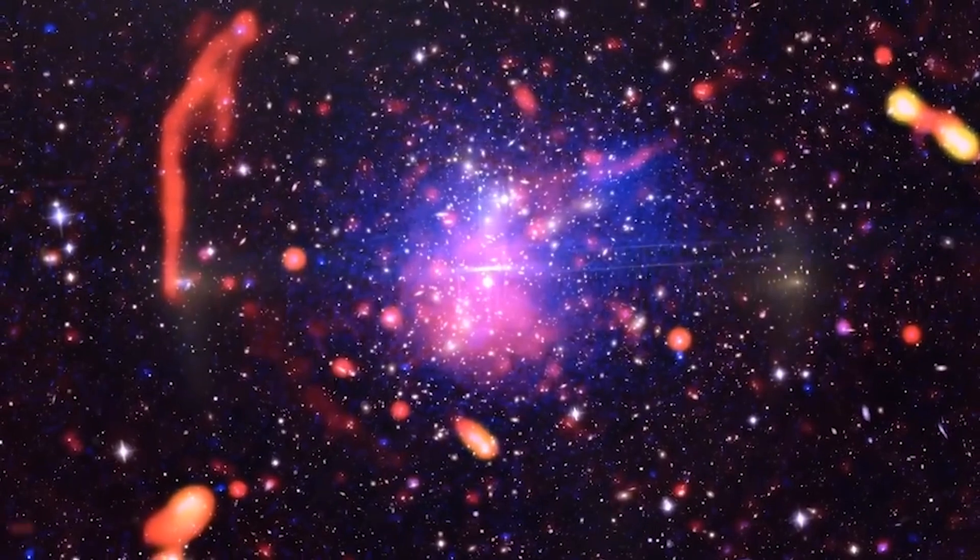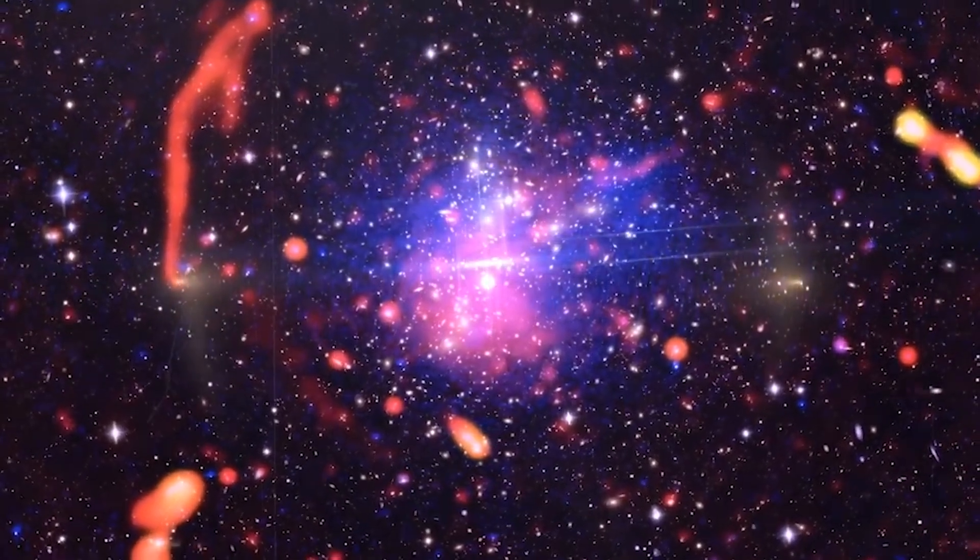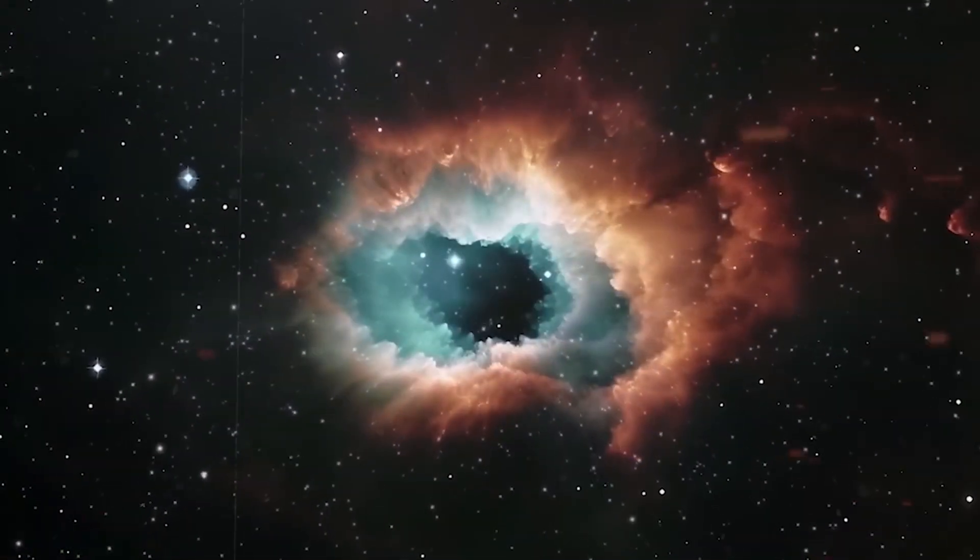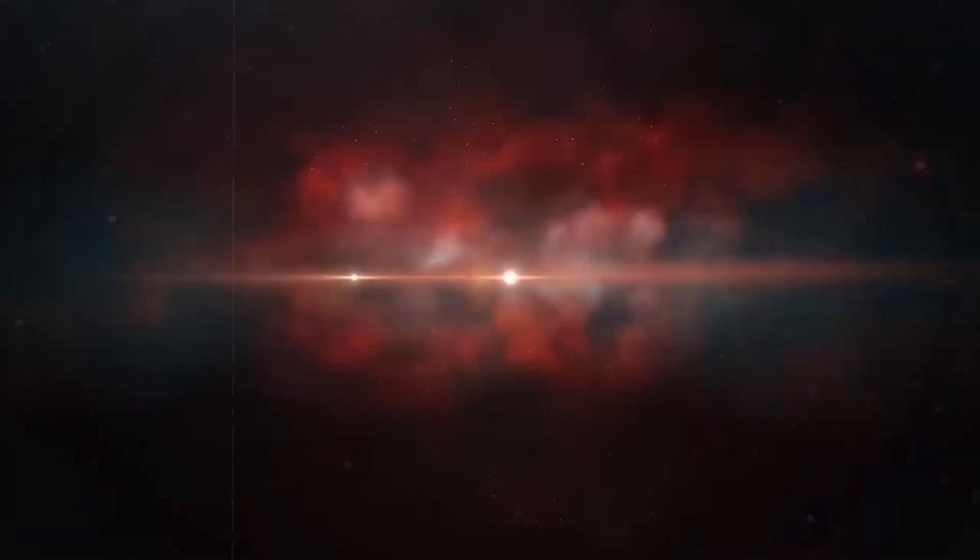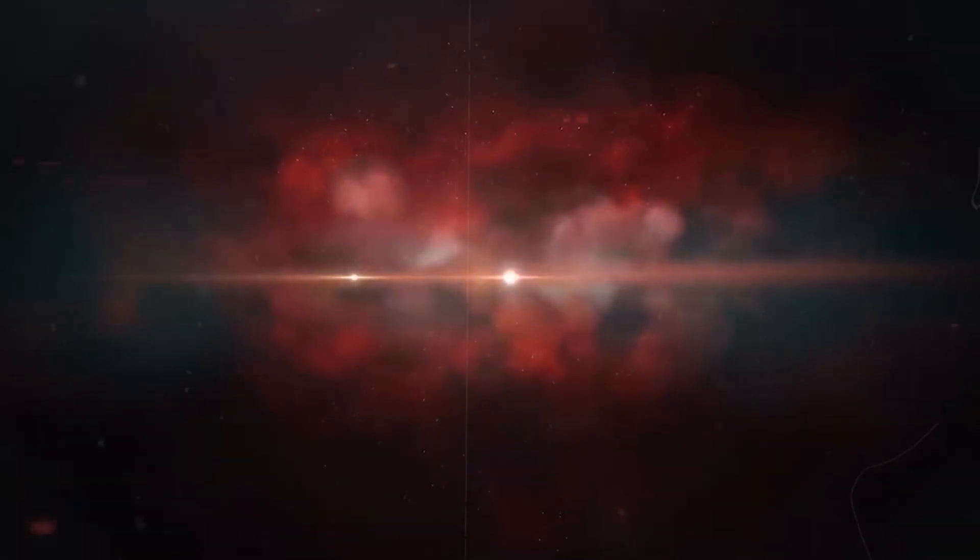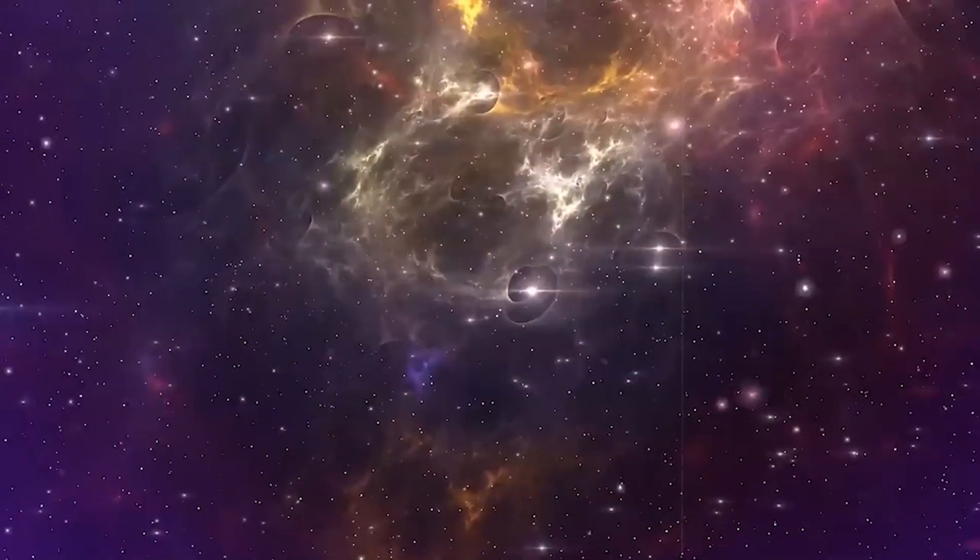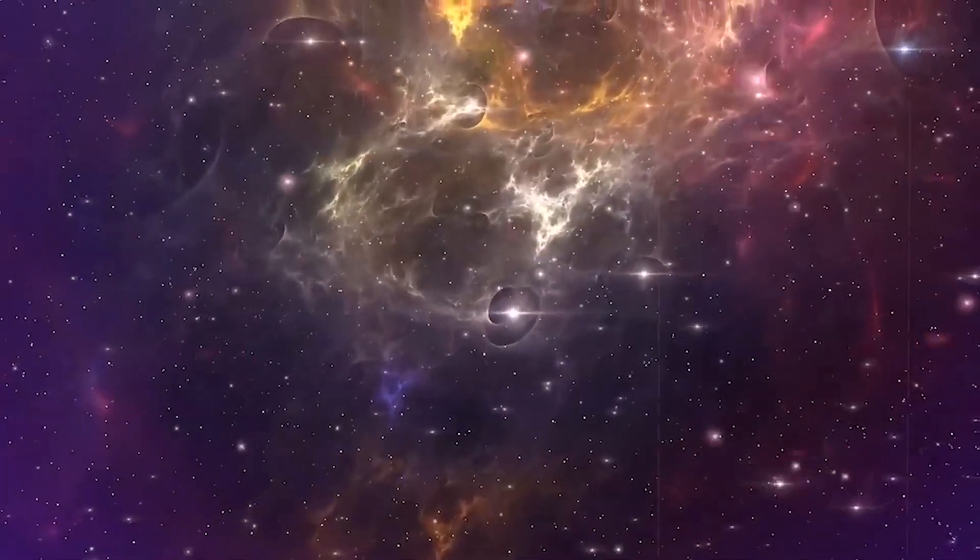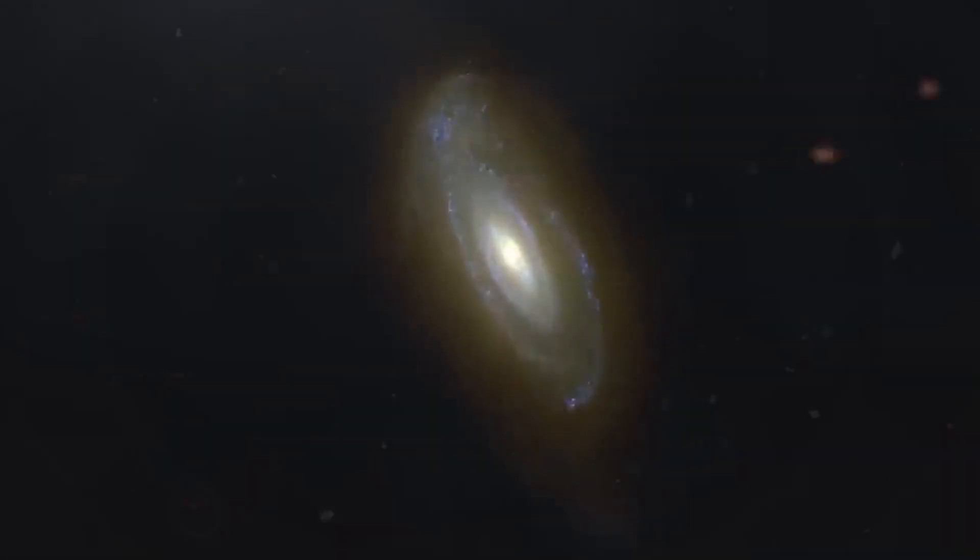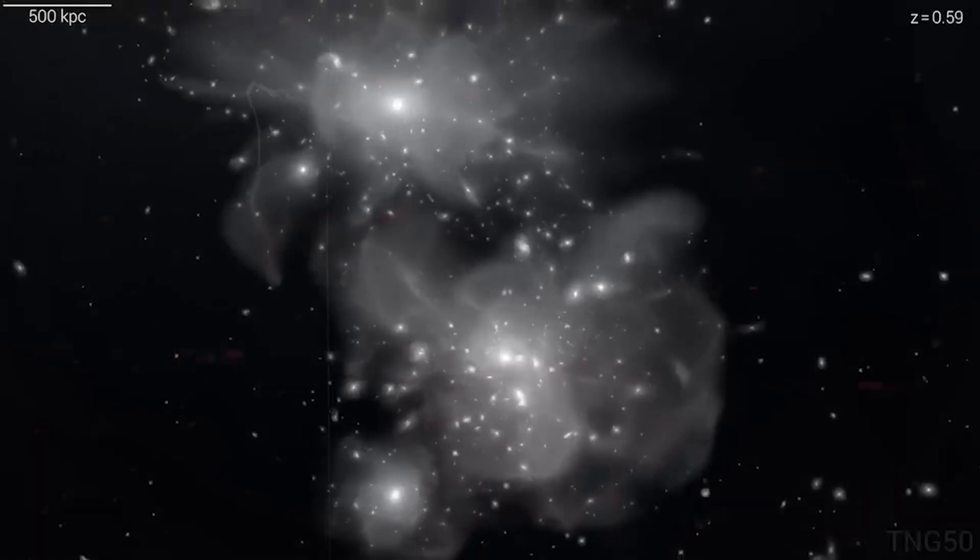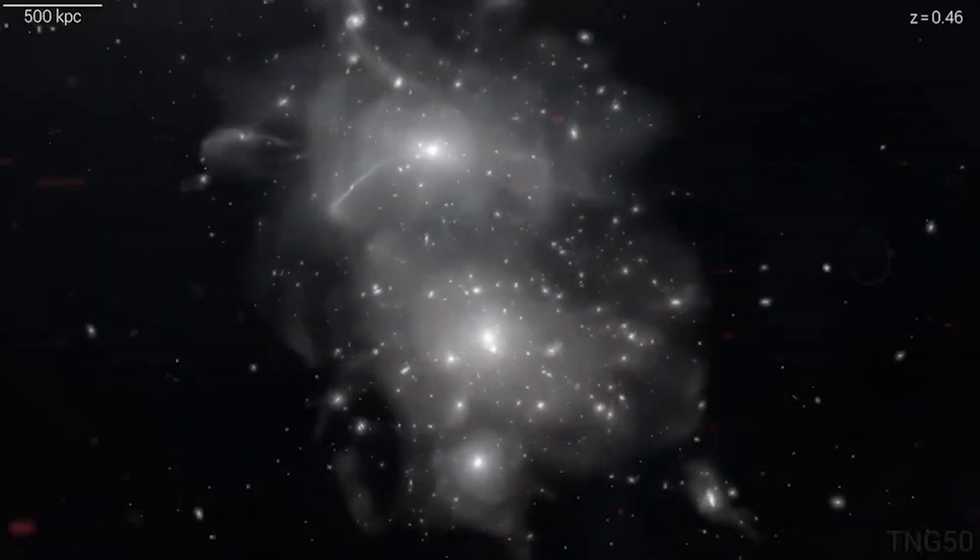Despite notable advancements, such as accurately depicting the formation of celestial bodies like the Milky Way and Andromeda Galaxy, FLAMINGO falls short of explaining the observed weak clumping of matter in the current-day universe. In other words, it failed to resolve the very thing it was created to help solve, the S8 tension. Or might I say that the FLAMINGO simulations indicate that something is terribly wrong with our cherished standard model of cosmology?